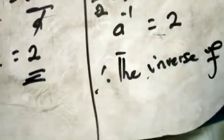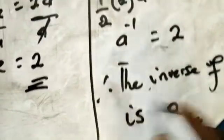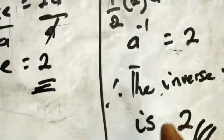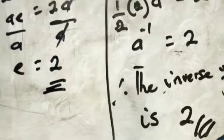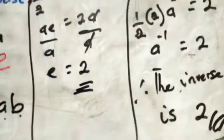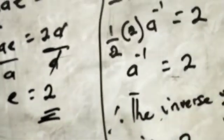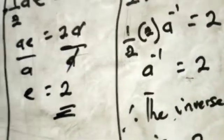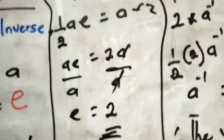That is how you find the inverse and identity elements under a binary operation. If you enjoyed the video, don't forget to subscribe to our YouTube channel. If you have any questions, comment below and we will attend to you. Thanks for watching.